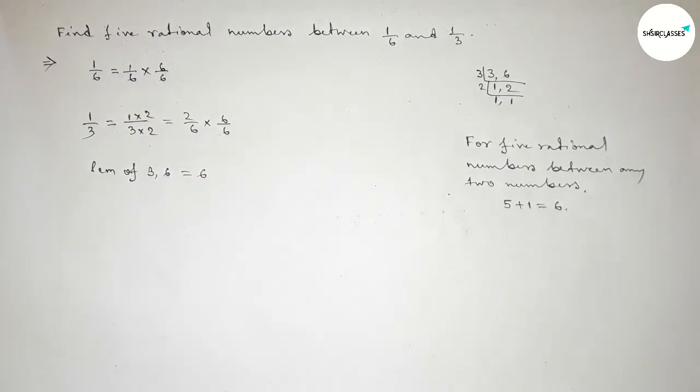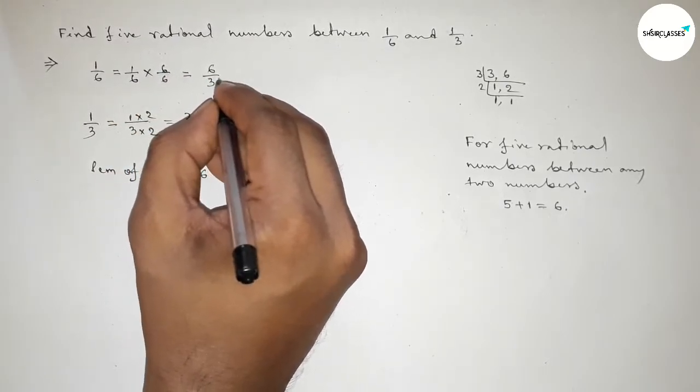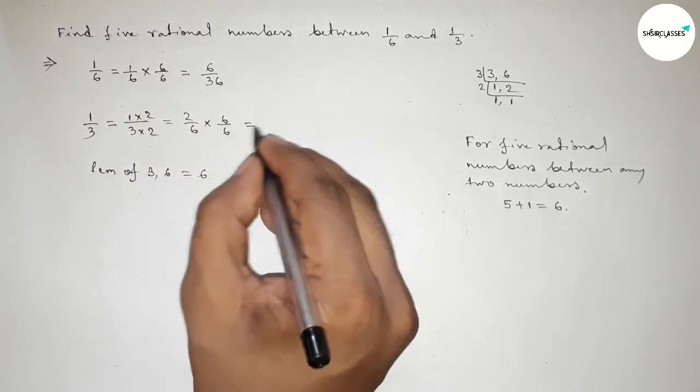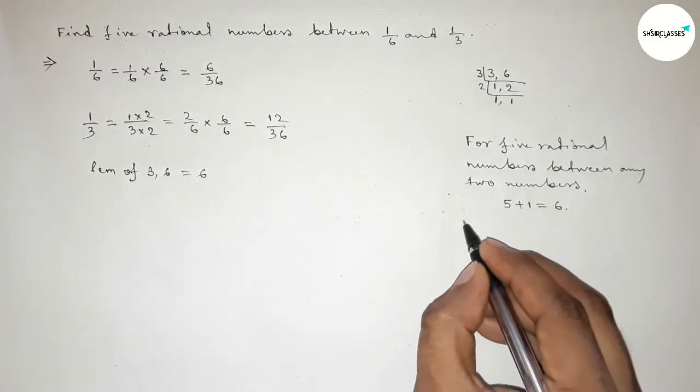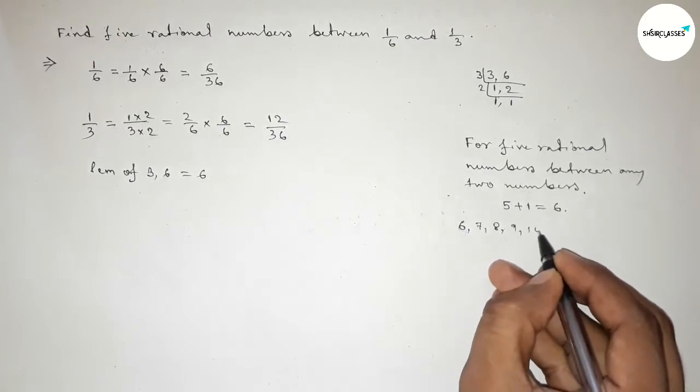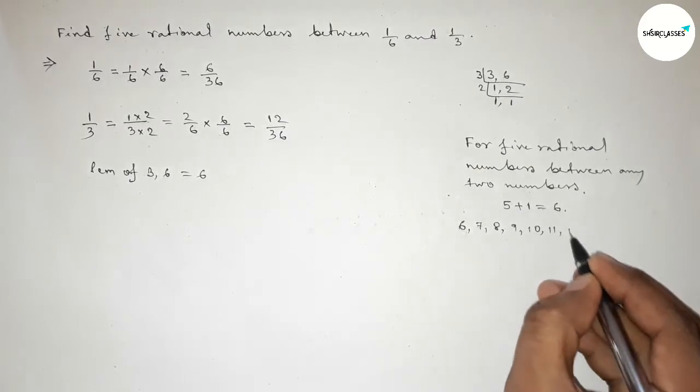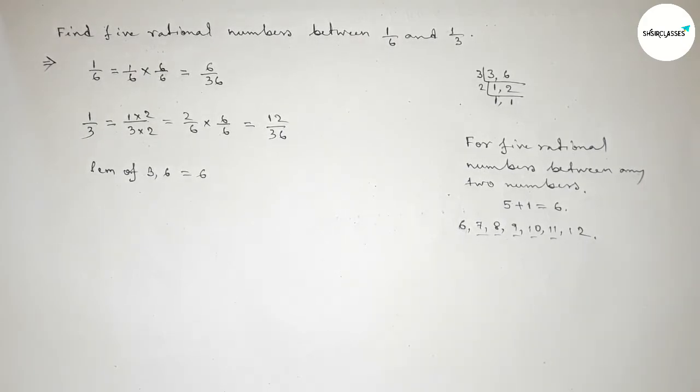Okay, so this is 6 over 36 and here equal to 12 over 36. Now between 6 to 12 we can get five natural numbers. So here write down all the natural numbers, and these are the five natural numbers.